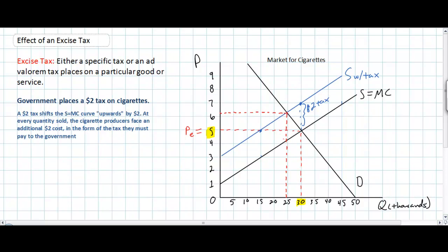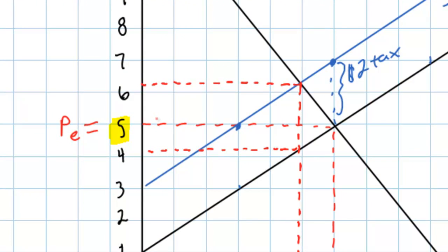Let's explain why. The decrease in supply leads to an increase in price and a decrease in quantity demanded. However, the price does not increase by the full $2, because consumers' demand for cigarettes is not perfectly inelastic. If consumers were totally unresponsive to changes in price, producers would simply raise the price by $2, leading to no decrease in quantity demanded. But since demand is downward sloping, consumers are somewhat responsive. Producers find that raising the price by the full $2 would cause quantity demanded to fall so much that producers would suffer unnecessarily. Therefore, they only raise the price by around $1.20, as we can see in the graph.